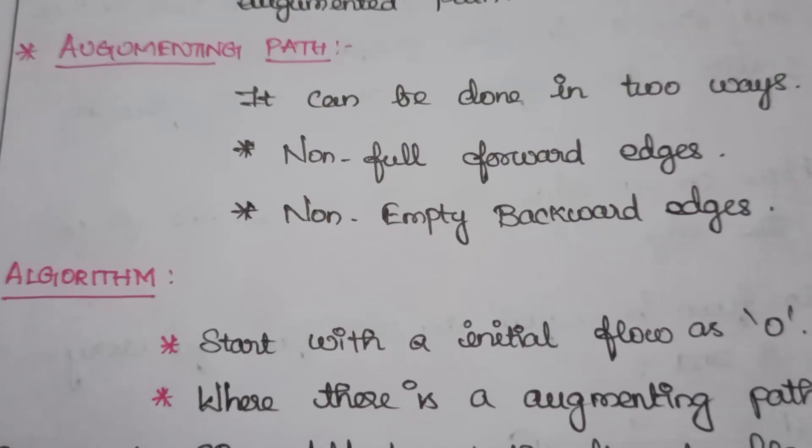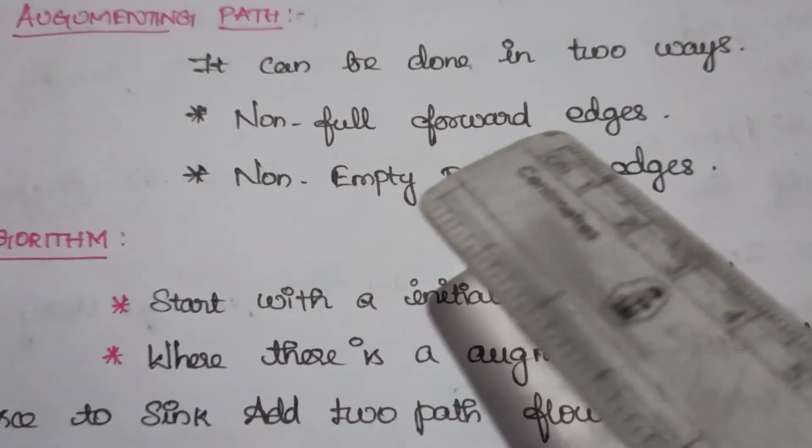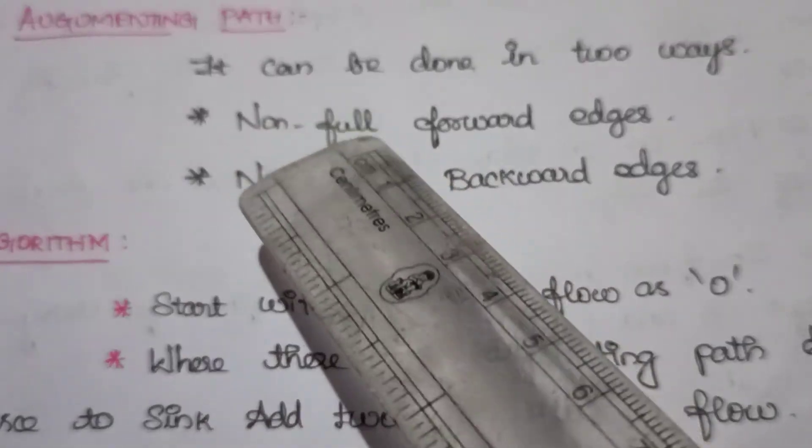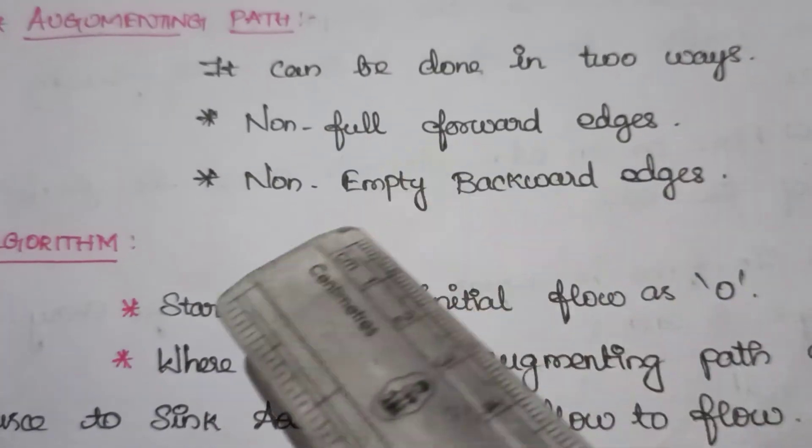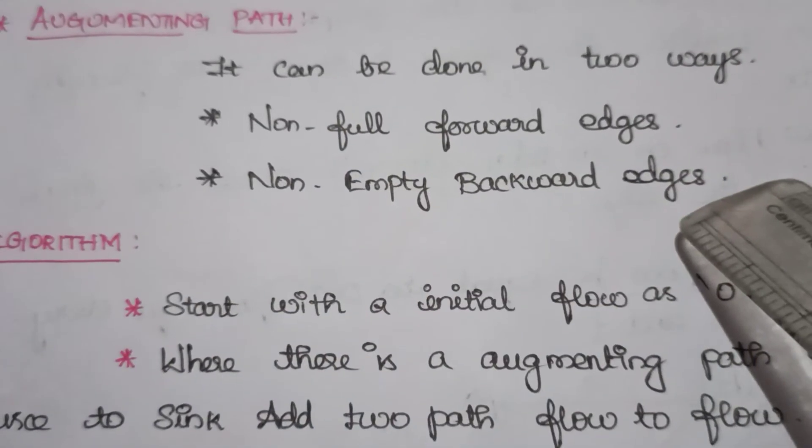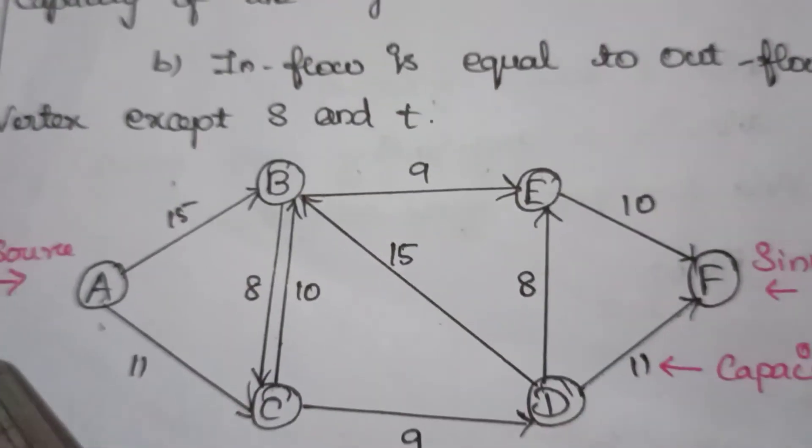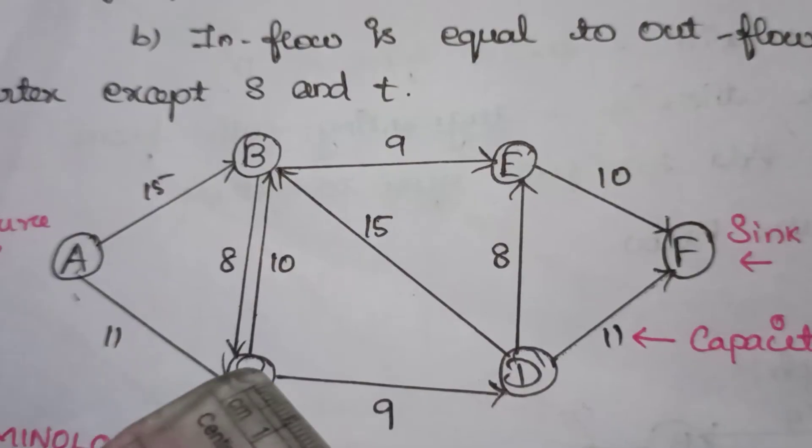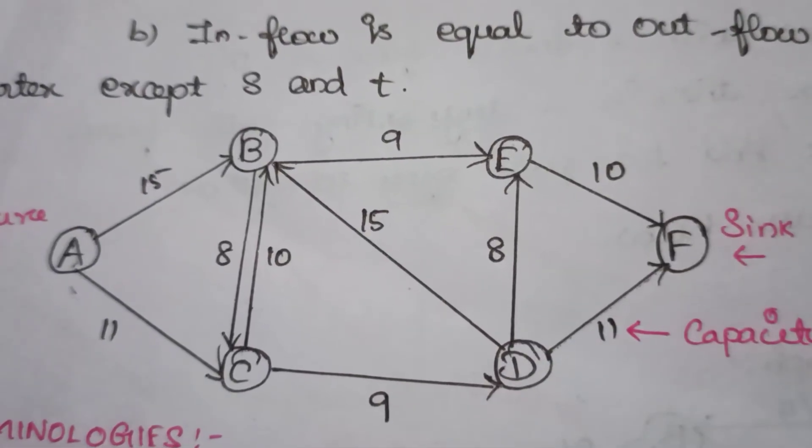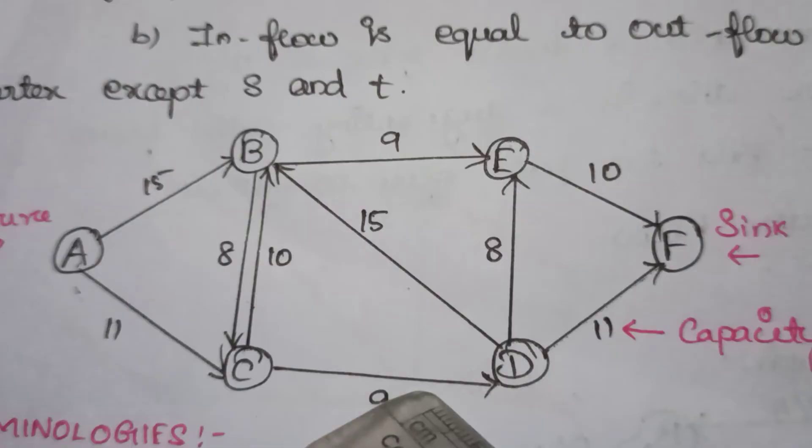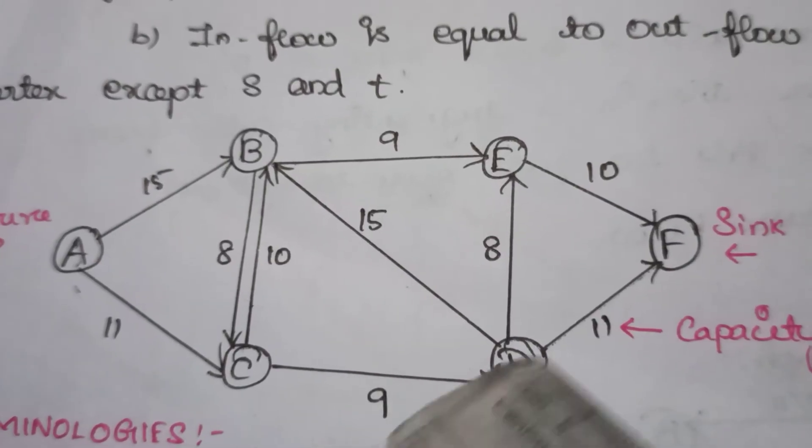Then augmenting path. Augmenting path can be done in two ways: number one, non-full forward edges and non-empty backward edges. Non-full forward edges means when we are traversing through the forward edges, the capacity should not exceed. So this is what non-full forward edges.